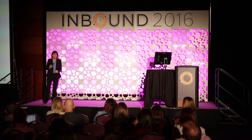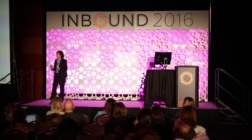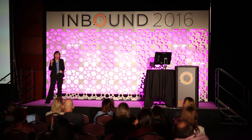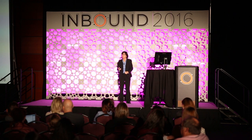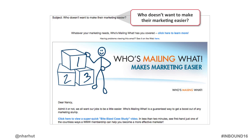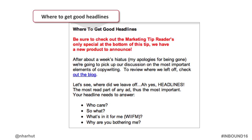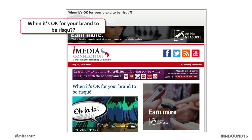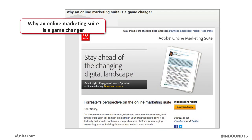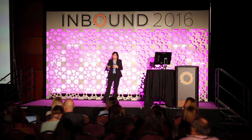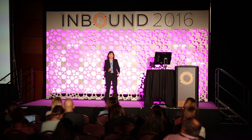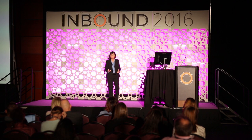A great way to use the five W's and the one H is in your subject lines: 'Who doesn't want to make their marketing easier?' 'What do 90% of your audience have in common?' 'Where to get good headlines.' 'When it's okay for your brand to be risqué.' 'Why an online marketing suite is a game changer.' 'How to guarantee a decision-maker meeting when selling to the government.' Who, what, where, when, why, how — these are magic words for subject lines because they get people to think 'I don't know the answer' and take action to find out, whether that's opening the email, downloading the white paper, or going to the website.